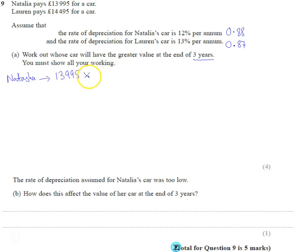So the rule is it's just the amount times the multiplier, in this case 0.88 to the power of three. So when we do that we get 9537.20064, so her car is worth £9,537.20 after three years.